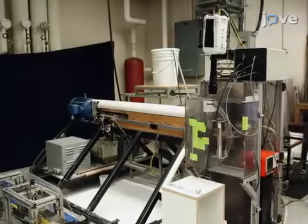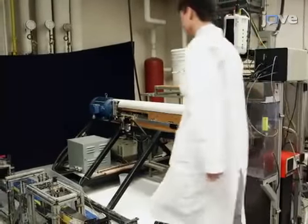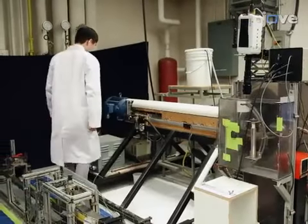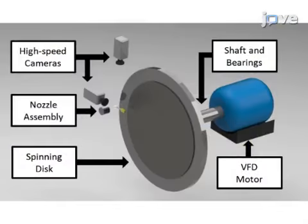This video starts at the spinning disk apparatus after preparation of the test fluid. This schematic provides an overview of the system. A disk is driven by a variable frequency drive electric motor. A nozzle is positioned to force a jet of test fluid onto the disk surface. The cameras record the fluid surface interaction.